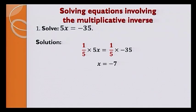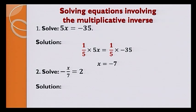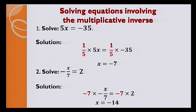Let's have a look at the second example: minus x over 7 is equal to 2. To eliminate minus 1 over 7, we need to multiply minus 7 on both sides. Therefore, the answer is x is equal to minus 14.